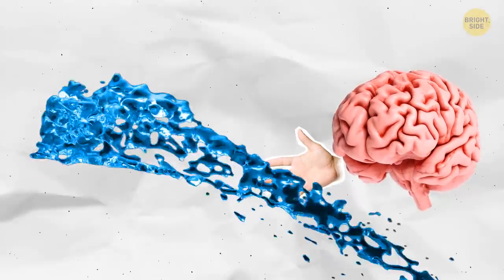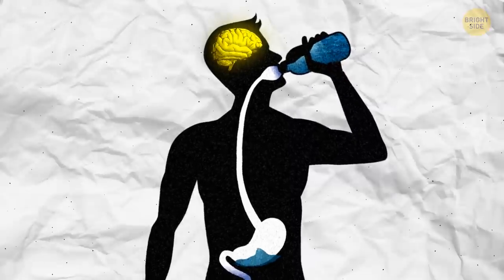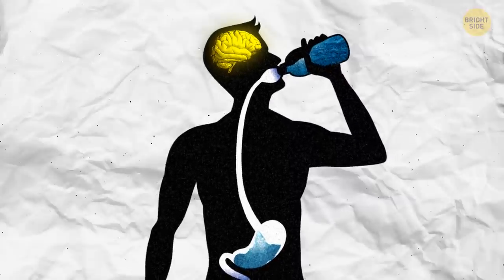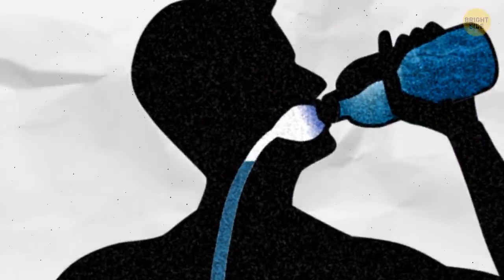By the way, your brain makes sure you don't drink too little or too much water. After you swallow some liquid, your mouth and throat start to fire signals to your brain, telling it to stop drinking. Otherwise, you'd keep gulping down water for the entire 10 to 60 minutes it takes the liquid to get to your cells.